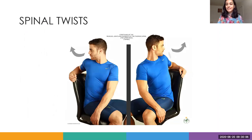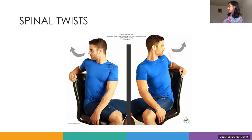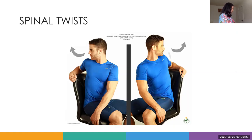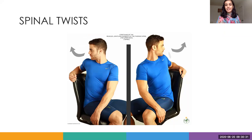Moving on to the spinal twist — just look back on each side. When you look all the way back, try to hold that position for 30 seconds. You should feel that stretch. Then repeat on the other side. Incorporate this into your routine, holding minimally for 30 seconds on each side.